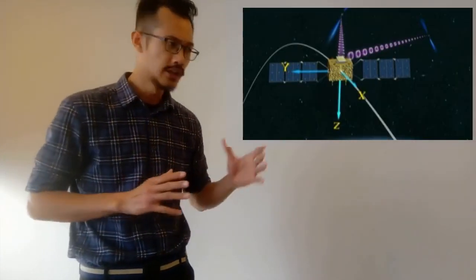Pulsar rotation can be used to measure time more precisely than atomic clocks. Pulsars can be used to navigate aircraft as an alternative to GPS, and I am using them to test Einstein's theory of relativity.